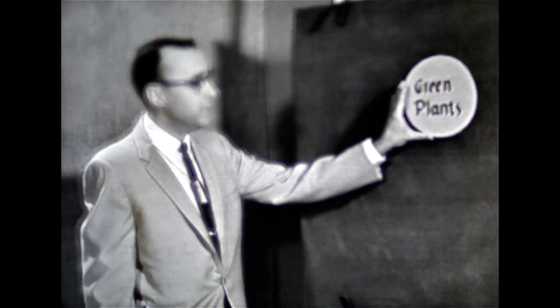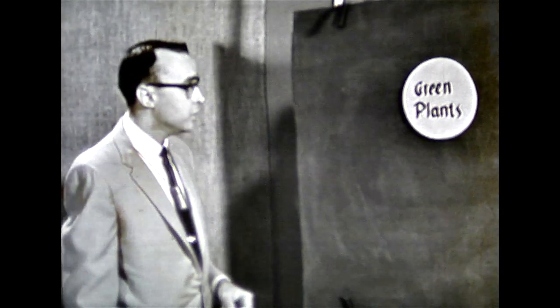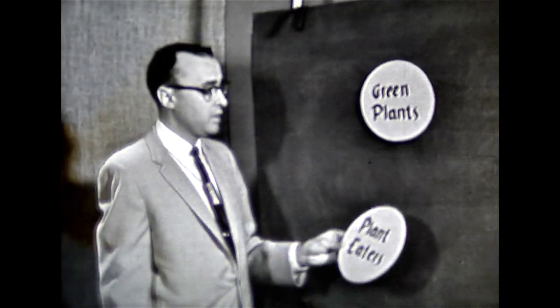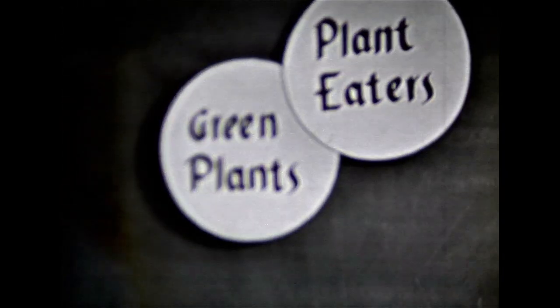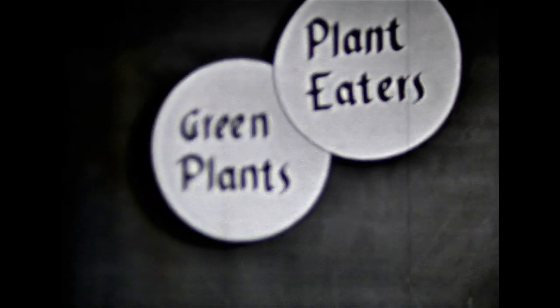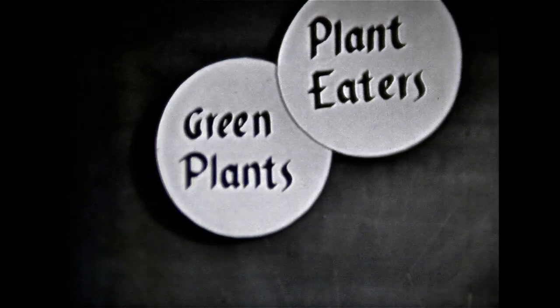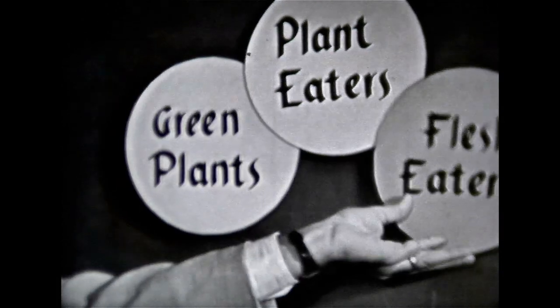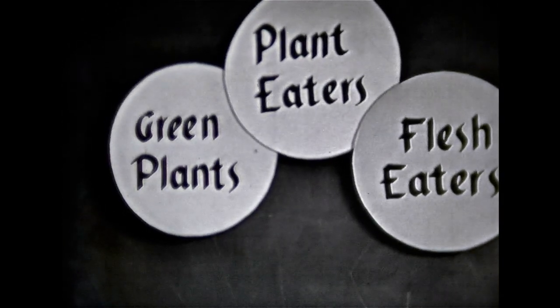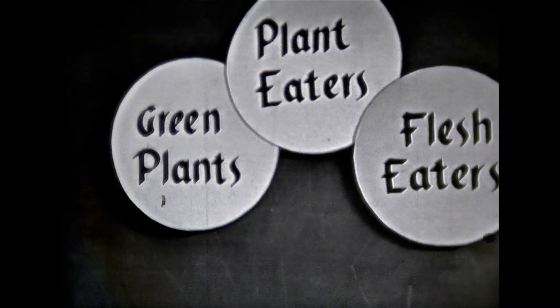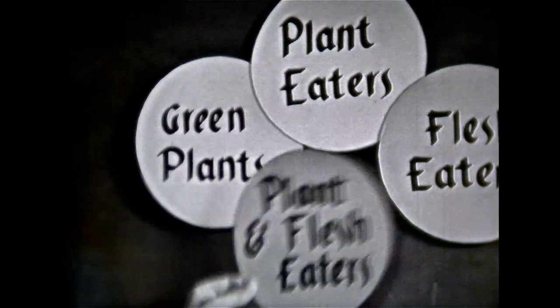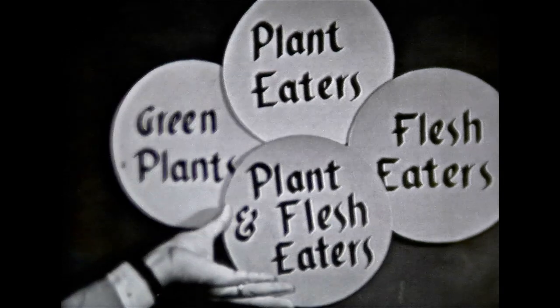Suppose I use a diagram to explain what I mean. I have over here a circle which we will let represent green plants. There are certain animals which eat these green plants and they would be called plant eaters. There are other animals, however, which do not eat green plants necessarily, but instead live on the flesh of other animals, and we could call these flesh eaters. But some animals eat both green plants and flesh, and so we would let that be represented by plant and flesh eating animals.